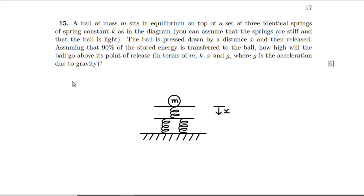The springs one. Oh, they got it different this time. We're squishing the springs rather than stretching the springs. A ball of mass M sits in equilibrium on top of a set of three identical springs of spring constant K. Ball is pressed down by distance X, then released. Assuming that 90% of the stored energy is transferred to the ball, how high will the ball go above its point of release? Right, this should be OK then. So the single spring is going to compress twice the amount that the double spring is. So we're going to have double the force going through the top one as the bottom ones. So we're just going to be compressing by two thirds of X on the top bit and one third of X on the bottom bit.